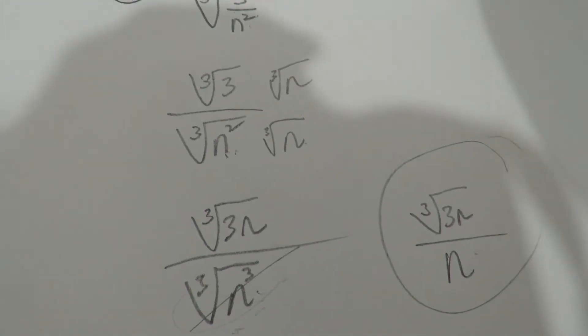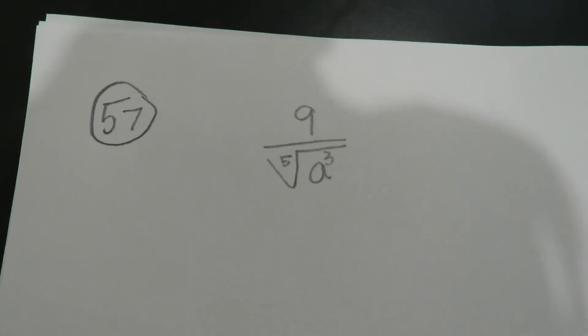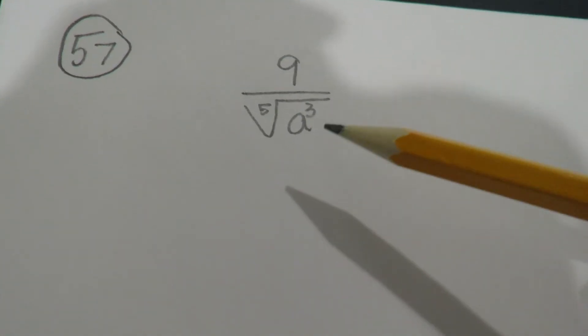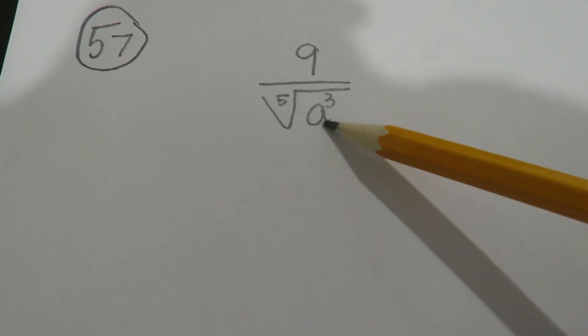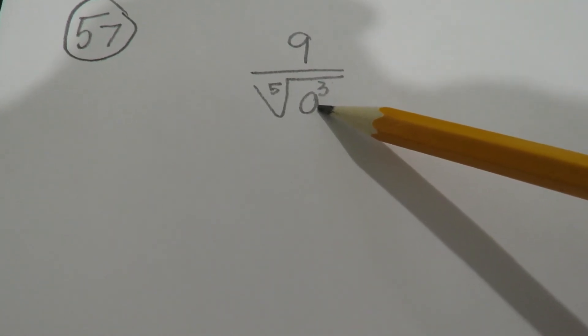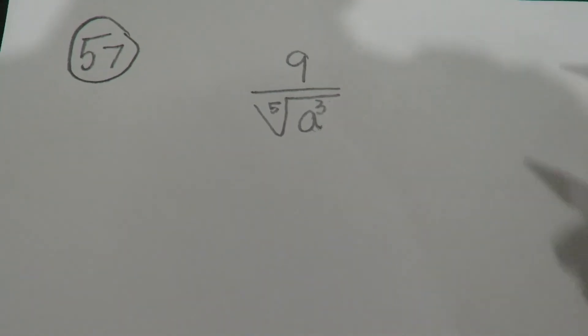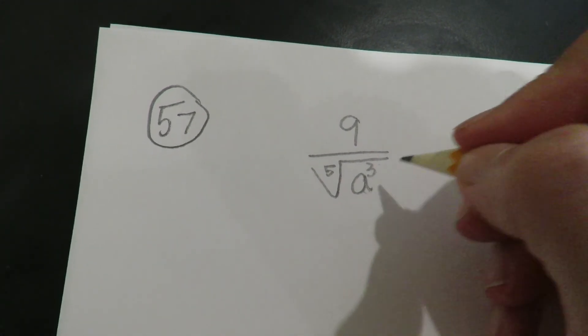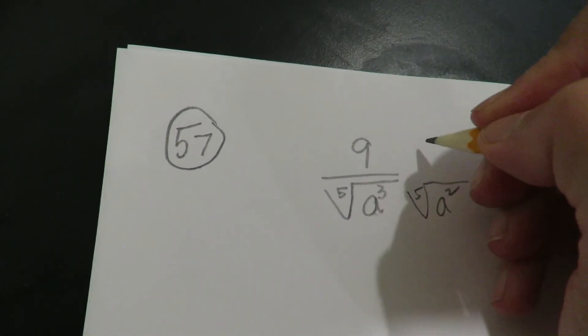Alright, I believe there's one more here. Let me just see. Yes, okay. Now, again, you can't have a radical in the denominator. So this is not a perfect fifth. So I have to force it to be a perfect fifth. What makes a perfect fifth is that you have five identical items. And I only have three right now. I have three a's, which means that I need to make it five. I need to give it two more.